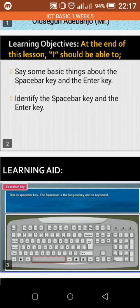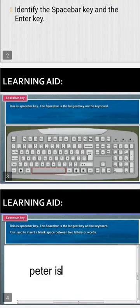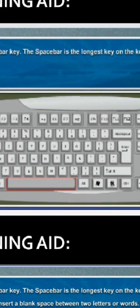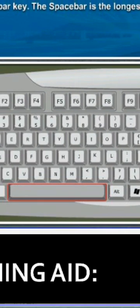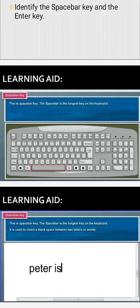The learning aid shown here — as introduced with this topic — shows the key you are looking at. The longest key on the keyboard is the space bar key, highlighted with a round red and rectangular red color around the key. That's the space bar key.